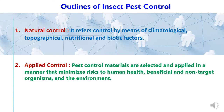Outlines of insect pest control. Broadly, insect control methods can be divided into two categories. First is natural control, which refers to control of insect pest by means of climatological, topographical, nutritional and biotic factors. Second is applied control, where pest control materials are selected and applied in a manner that minimizes risk to human health, beneficial and non-target organisms, and to the environment.